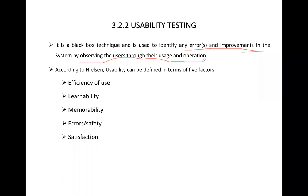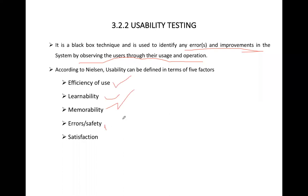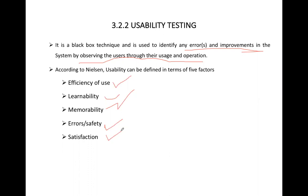According to Nielsen, usability can be defined in terms of five factors: efficiency of use, learnability, memorability, errors and safety, and user satisfaction. Efficiency should be good, learnability should be good, errors should be less and safety should be more, and the user should feel satisfied. If it feels easy to remember, does not give errors, and provides safety, then user satisfaction will follow.